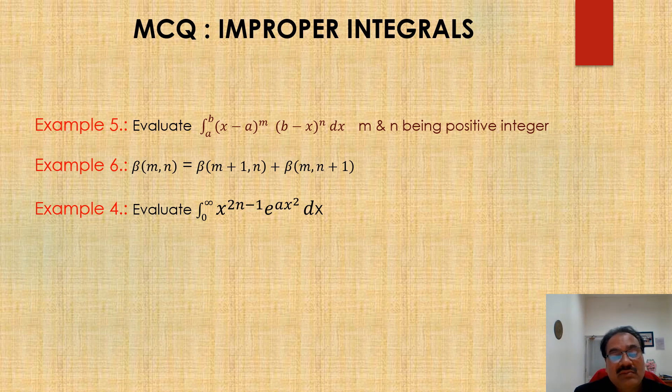Evaluate a to b x minus a power m, b minus x power n dx, where m and n being positive integers. And example 6 is beta m n. This is beautiful relation. Beta m plus 1, n plus beta m, n plus 1. So you have to establish this result.